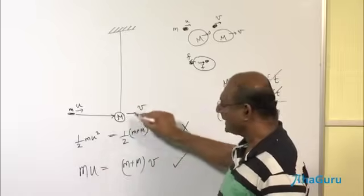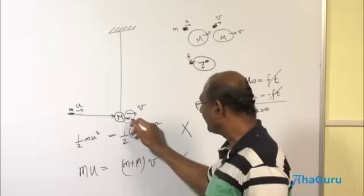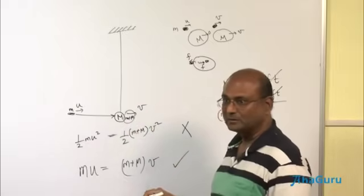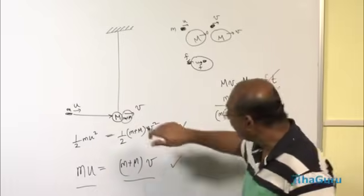m u, this had 0. When they are all moving together at the end, they are moving with v. So (m plus M) v is your final momentum. m u is your initial momentum. This is correct. Why is that wrong?